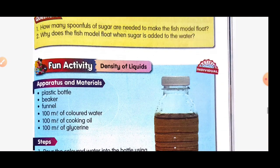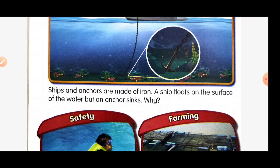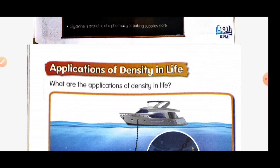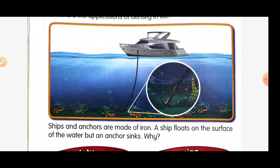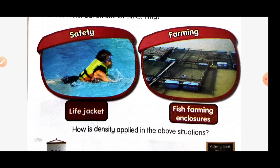Let's move to our last topic: application of density in life. A ship and anchor are made of iron. A ship floats on the surface of the water but the anchor sinks. We also use life jackets and fish farming in cages. These are examples of the application of density in life. That's all for our lesson today — see you in the next lesson, thank you!